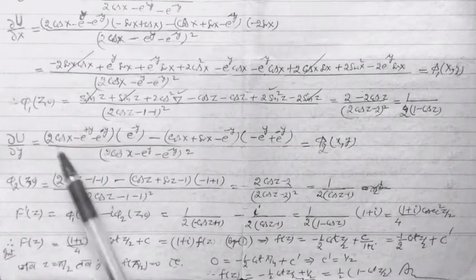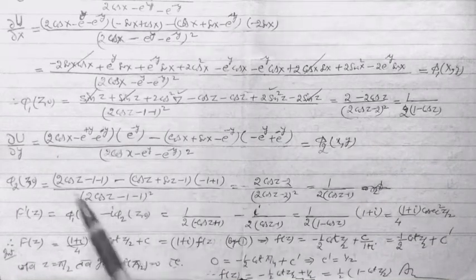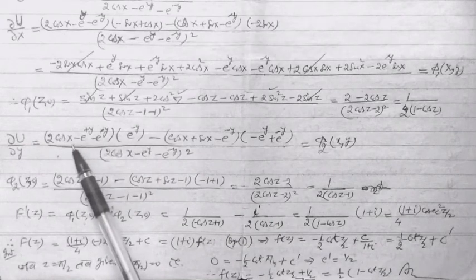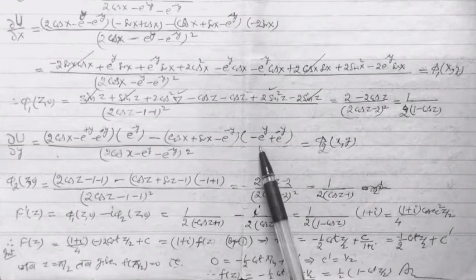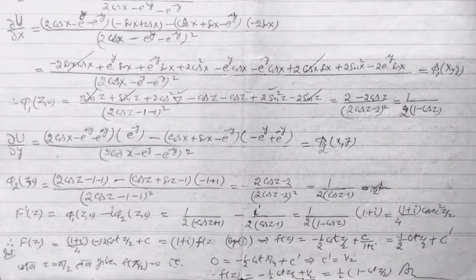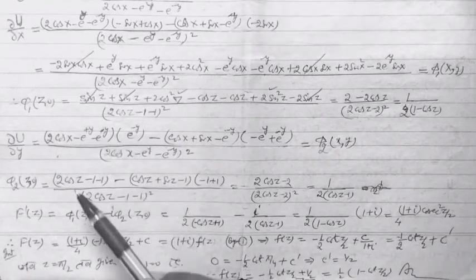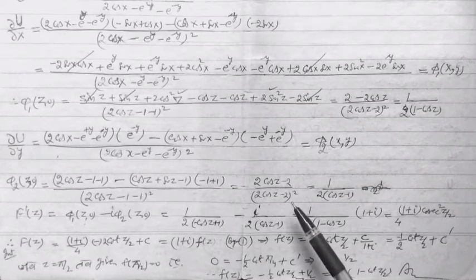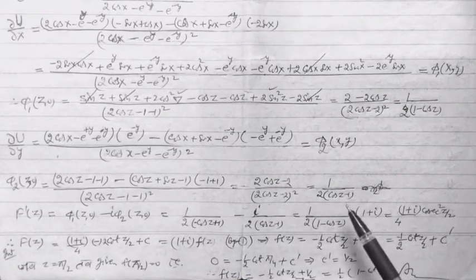अब differentiate partially with respect to y करते हैं। δU/δy निकाला — यह φ₂(x, y) आया। φ₂(z, 0) निकालने के लिए x की जगह z, y की जगह 0 रखते हैं: -1 + 1 = 0 वाली terms खत्म हो गईं, और बचा 1 / (2cos z - 2) = 1 / (2(cos z - 1))। So φ₂(z, 0) = 1 / (2(cos z - 1))।